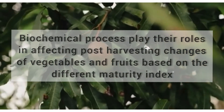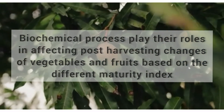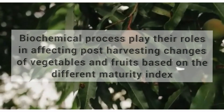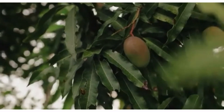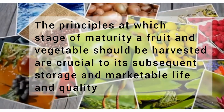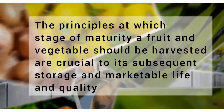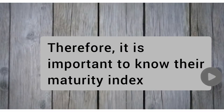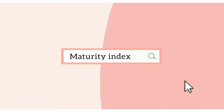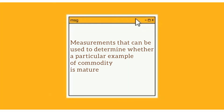Biochemical processes play their roles in affecting post-harvesting changes of vegetables and fruits based on different maturity indices. The principles at which stage of maturity a fruit and vegetable should be harvested are crucial to its subsequent storage, marketable life, and quality. Therefore, it is important to know their maturity index — measurements that can be used to determine whether a particular commodity is mature.